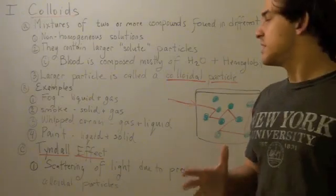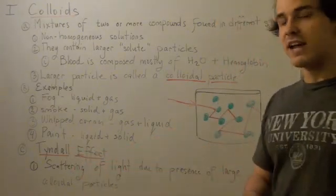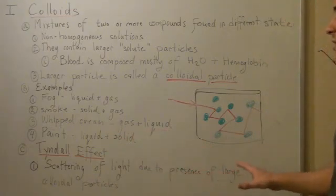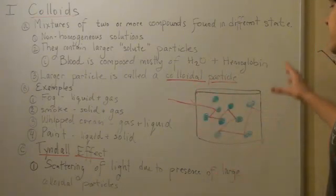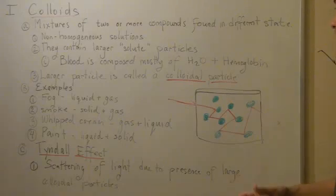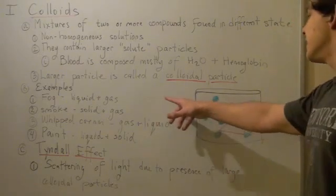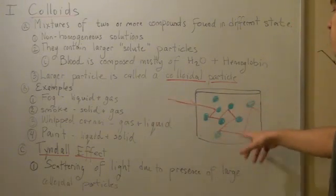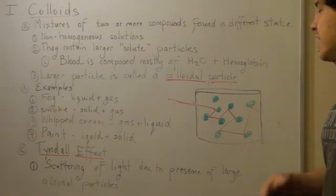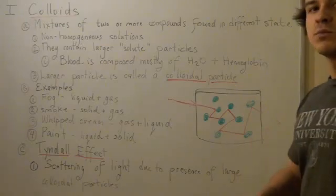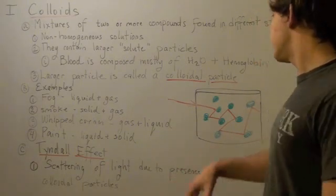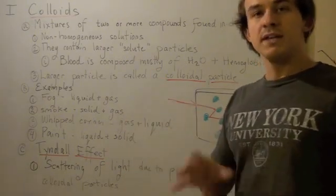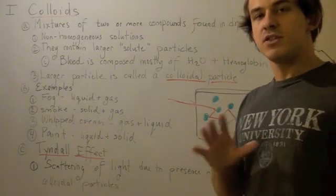Colloid systems also experience something called the Tyndall effect. The Tyndall effect is the scattering of light due to the presence of large particles. If you look at this system here — pretend this is a cup with a colloidal system inside, and these are the colloidal particles — when light enters, it bounces back and forth between these particles and loses energy. Eventually, when it comes out, it comes out with less energy, because light carries energy; light is composed of photons. That means the colloidal system will be translucent, so you won't be able to see through it very clearly.